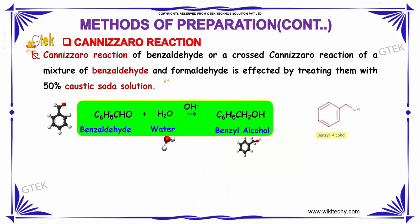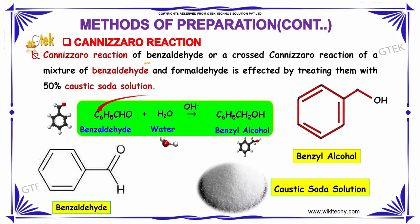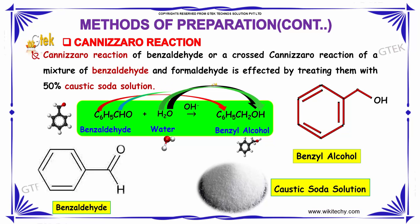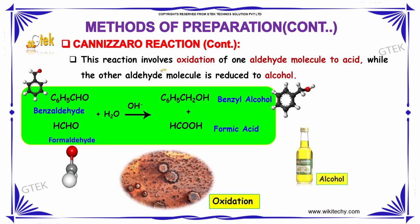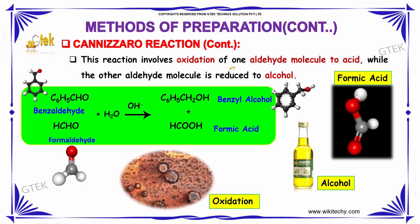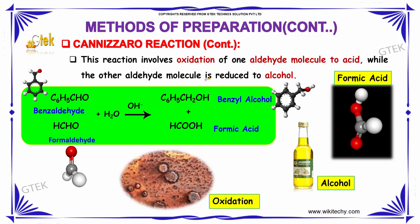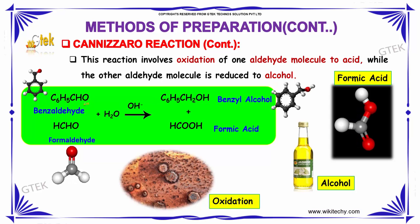Cannizzaro reactions: the Cannizzaro reaction of benzaldehyde, or a cross Cannizzaro reaction of a mixture of benzaldehyde and formaldehyde, is carried out by treating them with 50% caustic soda solution. This reaction involves oxidation of one aldehyde molecule to an acid while the other aldehyde molecule is reduced to an alcohol.